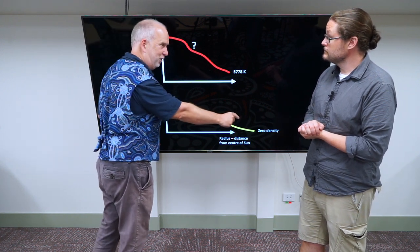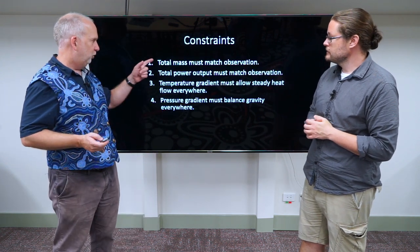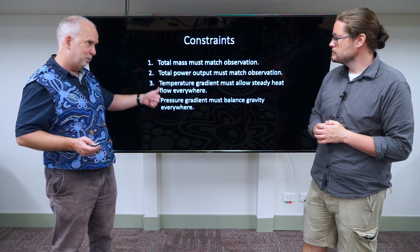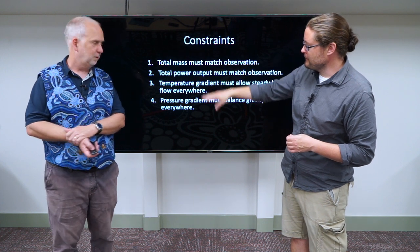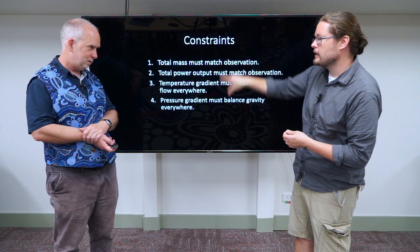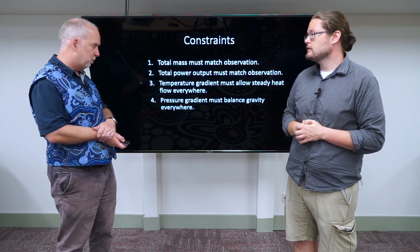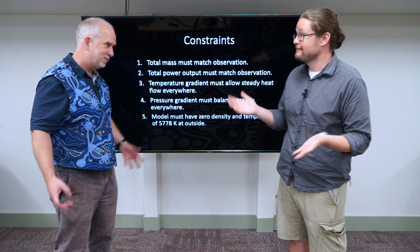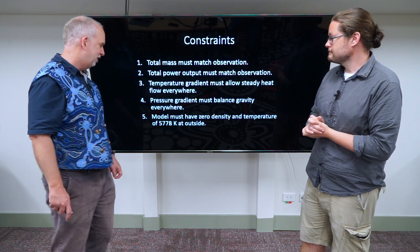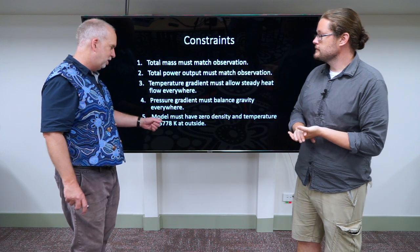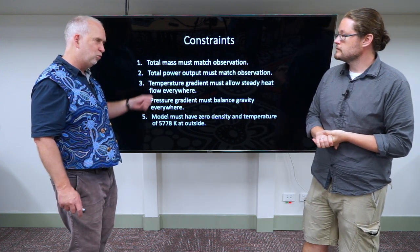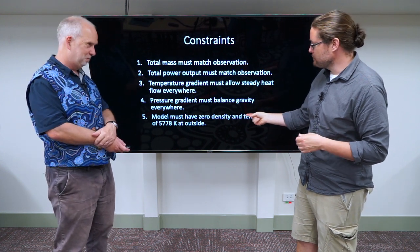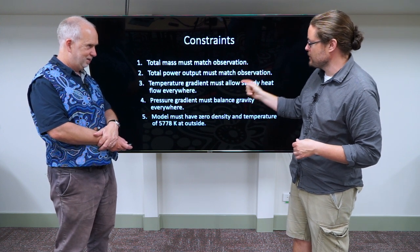But now we also know the temperature must be sufficient to allow things to flow outwards. So now we've got an extra constraint. We've got the total mass must match observation, the total power must match, temperature gradient must allow steady heat flow everywhere, and the pressure gradient, which will depend on the temperature and the density, must balance gravity everywhere. So now as we're building our constraints up, these further constraints are being even more constrained because they can't violate these other ones. So now it's starting to be rather tricky. Can we actually come up with a model that satisfies all these things? And there's one more constraint we should add, which we know that at the outside it's going to zero density. It must start from zero at the outside because that's space. And we know the temperature at the surface is 5,778 Kelvin. So we've got a fixed point at the outside, this temperature and zero density, and the pressure and temperature must increase as you go inwards in just such a way as to get the total mass and total power. So we must start at this point and slowly at some rate add pressure and temperature to get us this total.